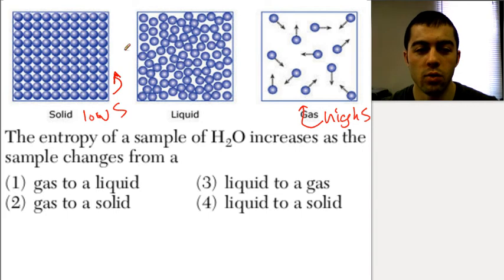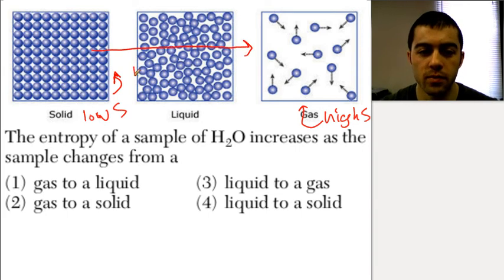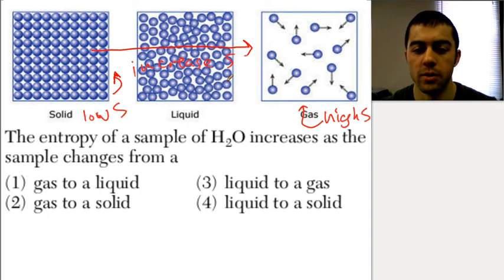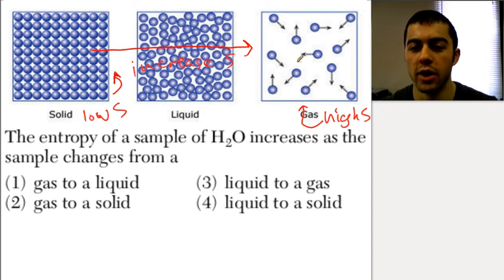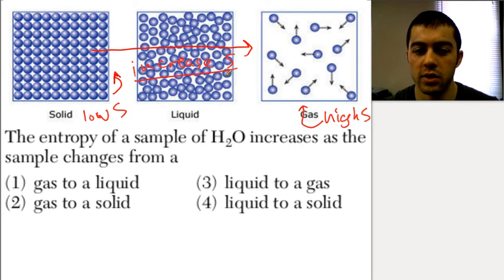As we go from solid to liquid to gas, we're increasing the entropy, just because there's more disorder and randomness as we go from solid to liquid to gas, resulting in an increase in entropy.